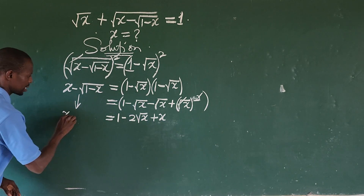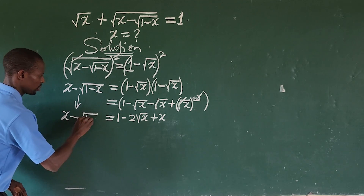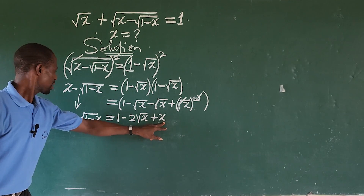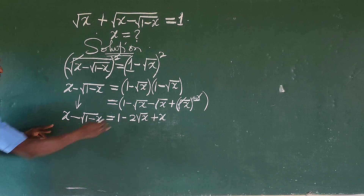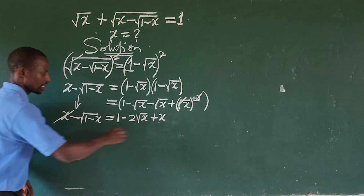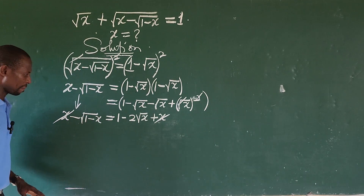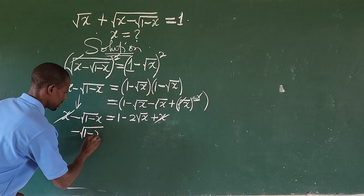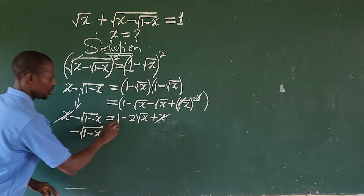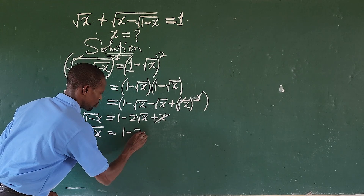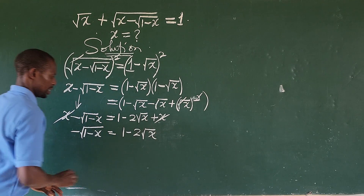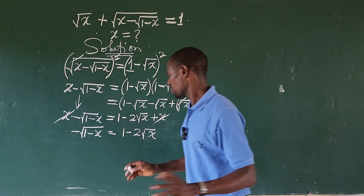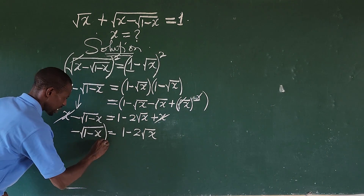So the right-hand side becomes 1 minus 2√x plus x. Collecting like terms — the x terms cancel from both sides — and we are left with: negative √(1 minus x) equals 1 minus 2√x. We still have a radical, so we need to square both sides again.